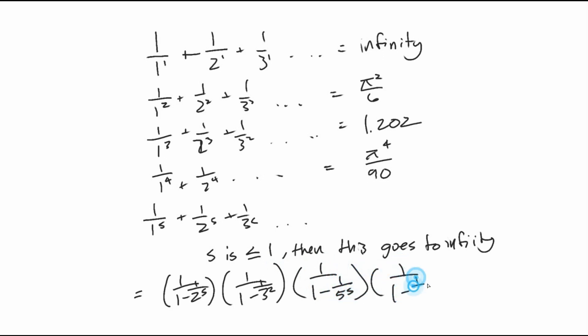1 over 1 minus 5 to the s, 1 over 1 minus 7 to the s. And these are actually going by primes. These numbers are going by primes.